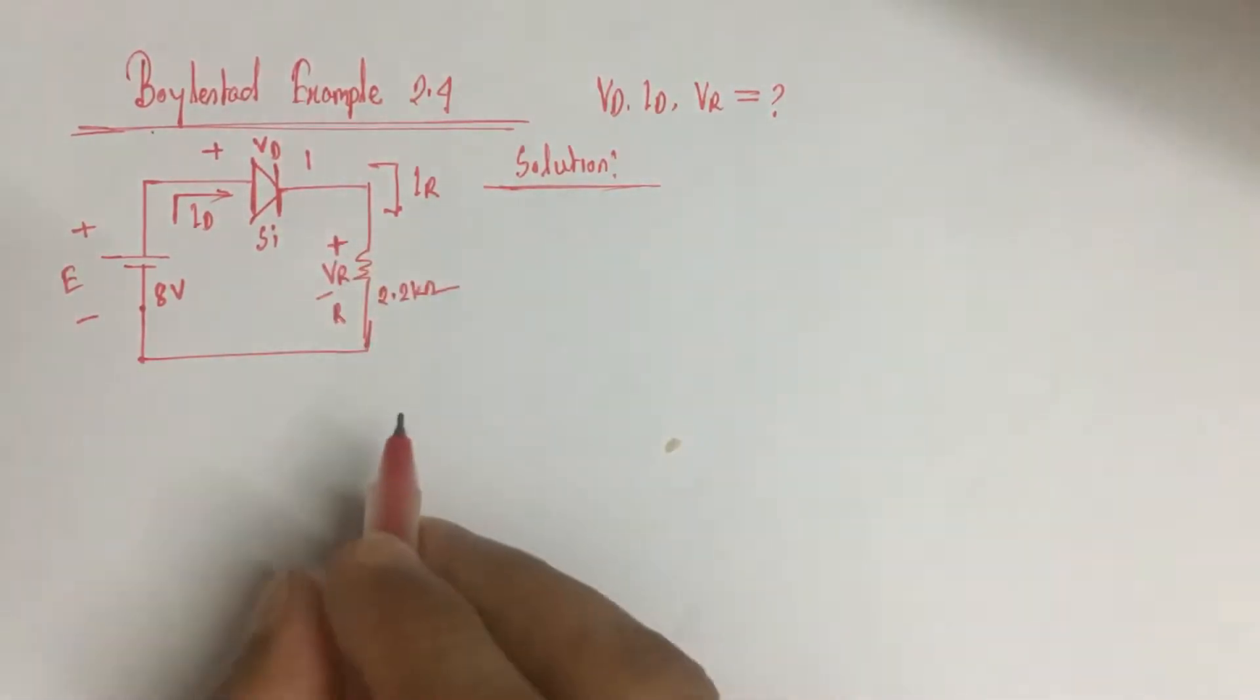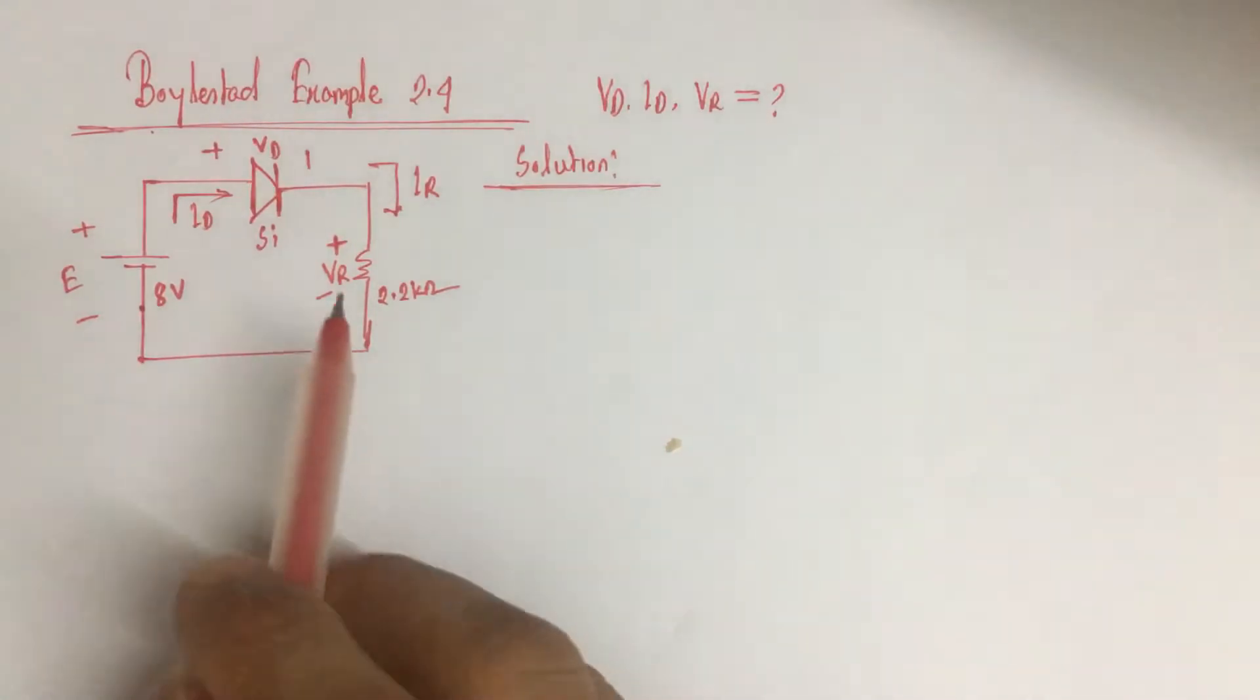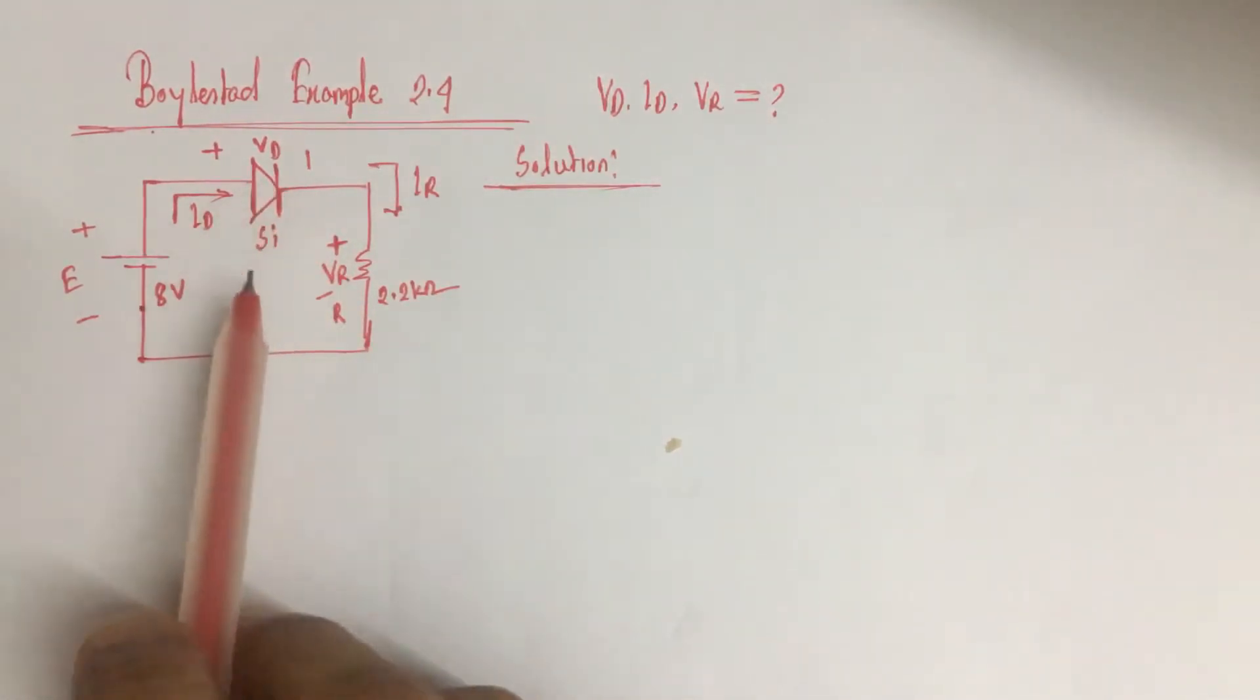For solving diode related problems, at first we have to identify whether the diode is on or off.